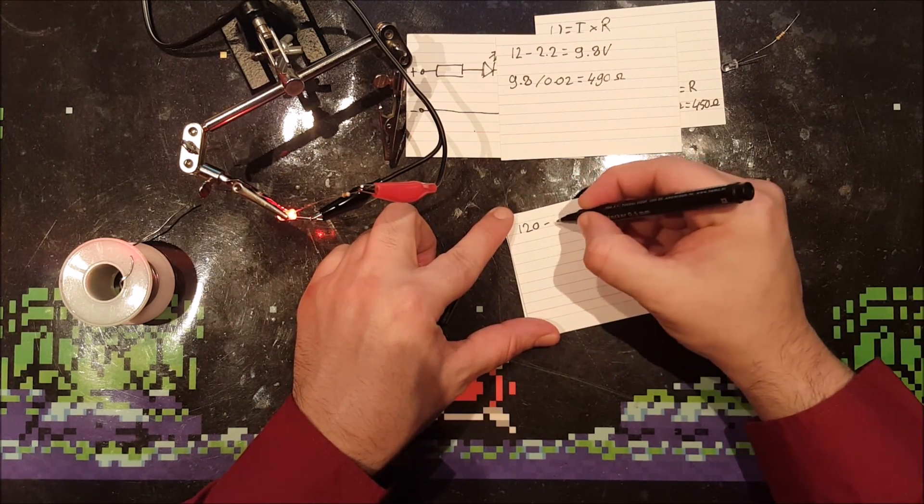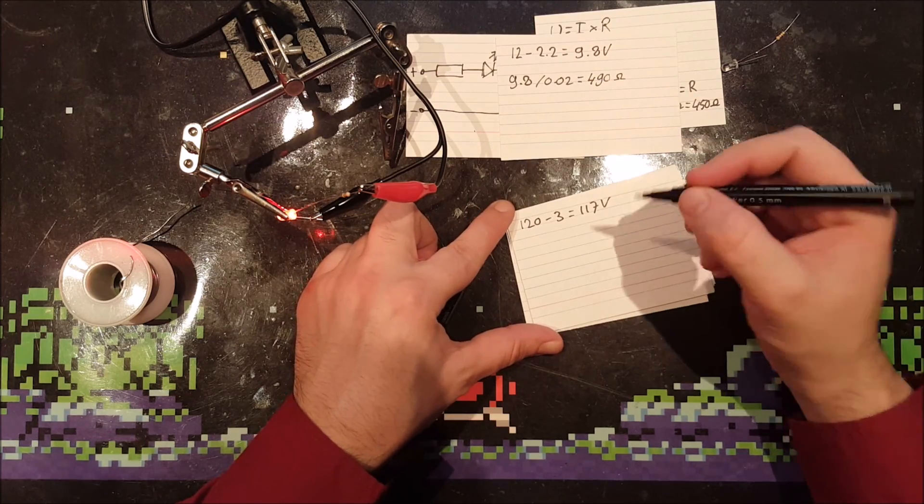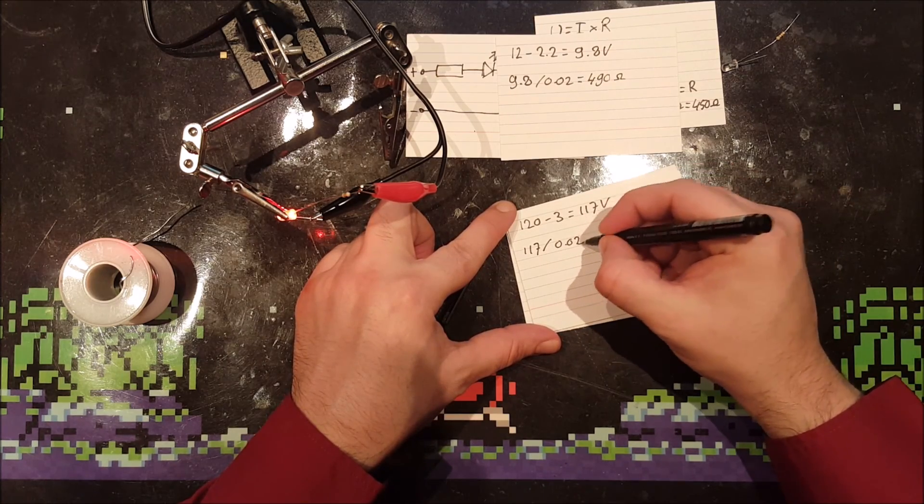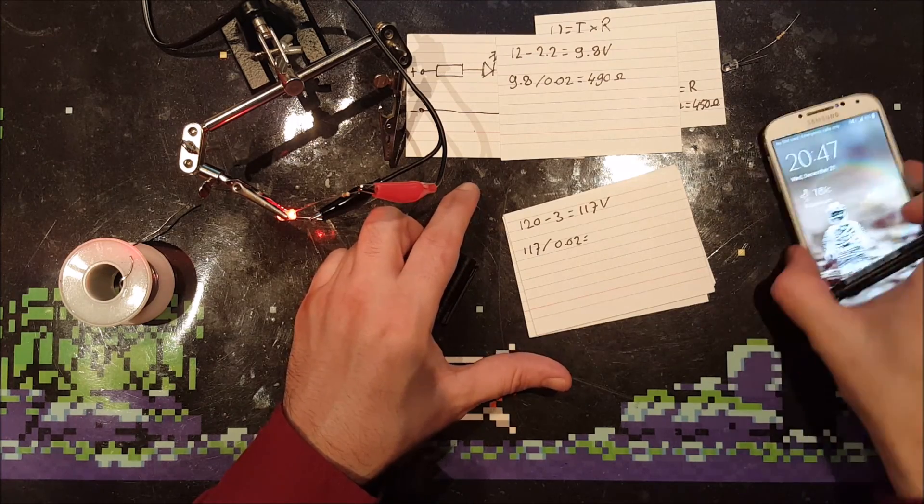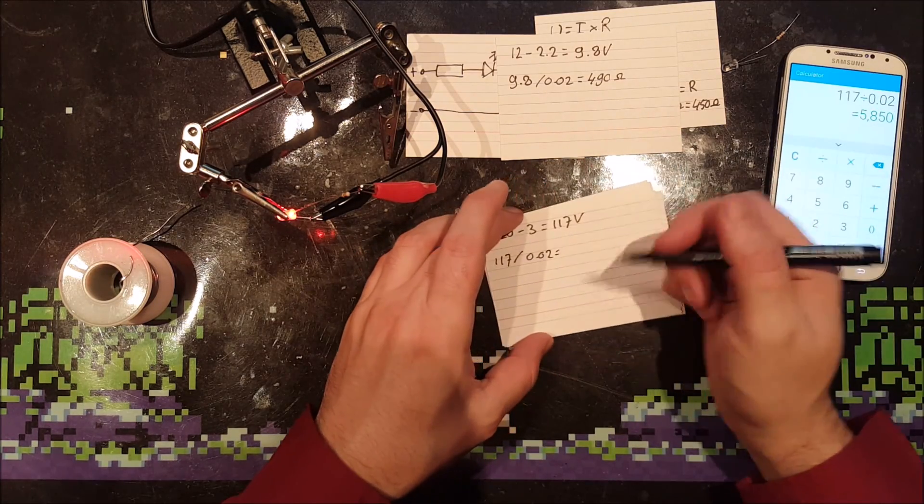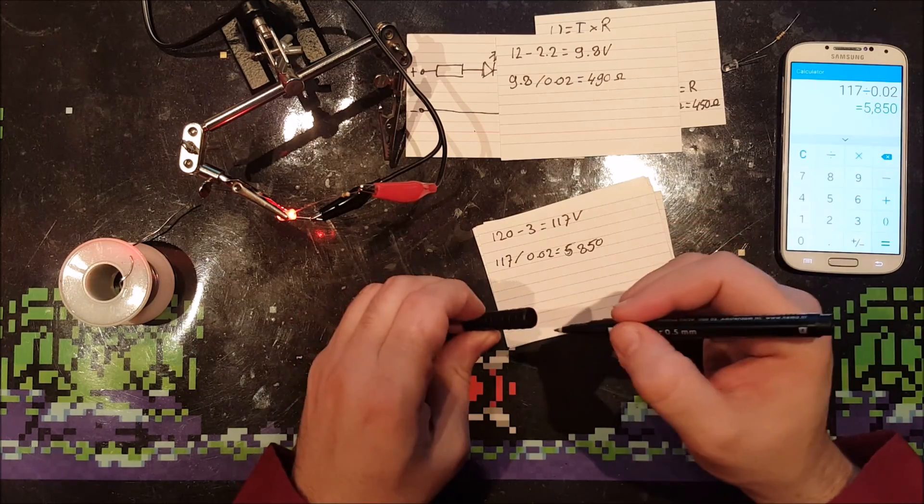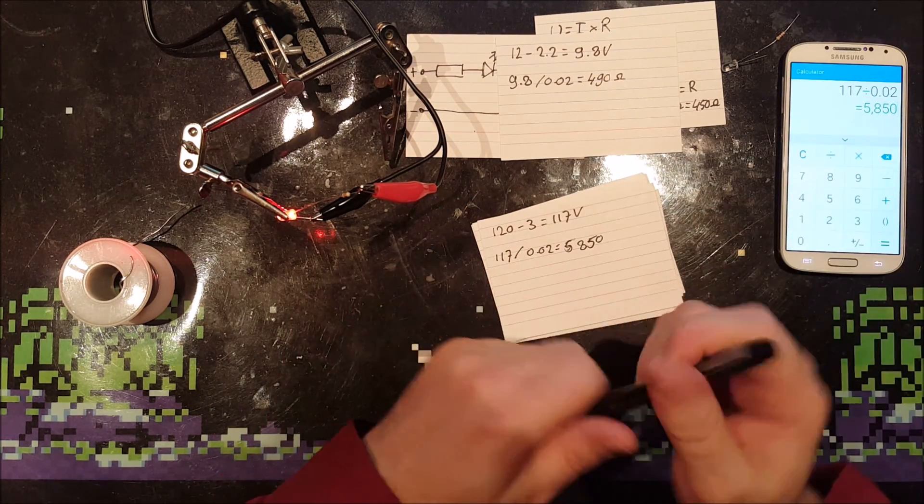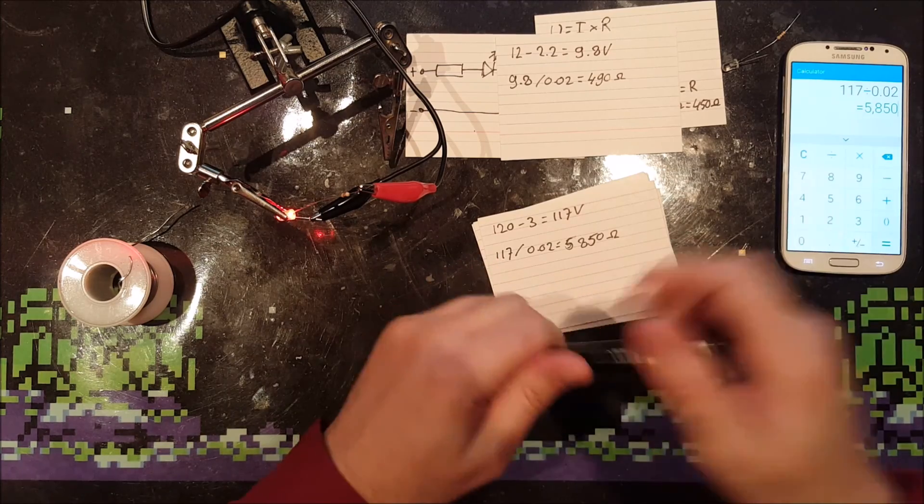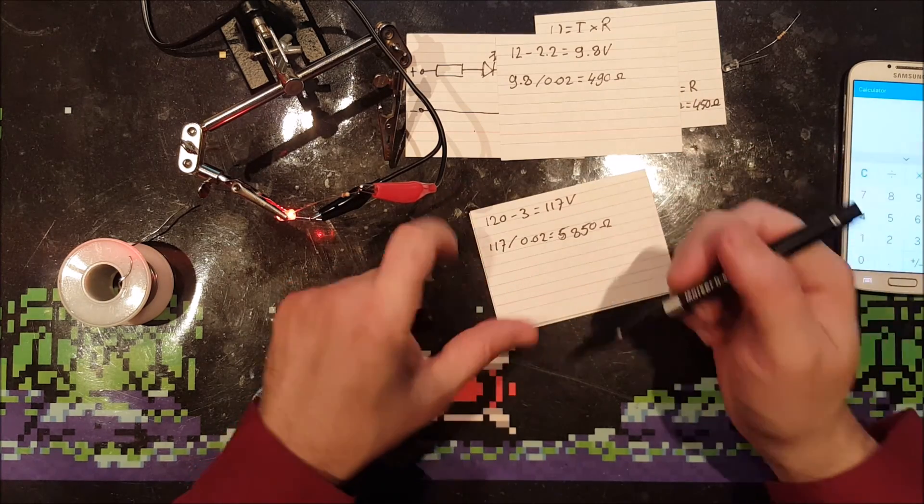Let's say 120 volts minus 3 is 117 volts to drop for the resistor. 117 divided by 0.02 amps, let's take the calculator. It makes that we need a resistor of 5,850 ohms. That will work for a very short time, because the resistor is rated for a quarter watt.